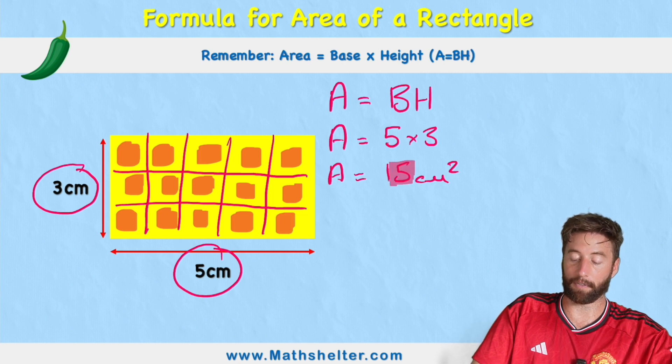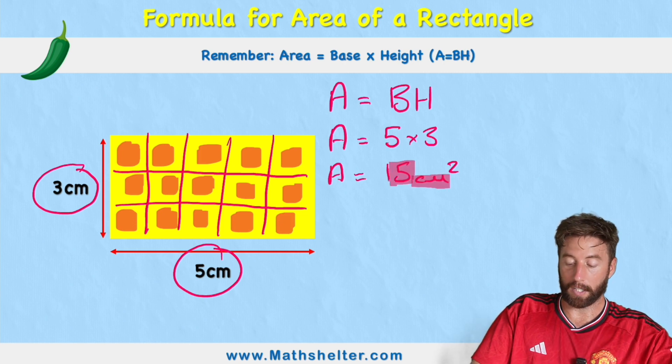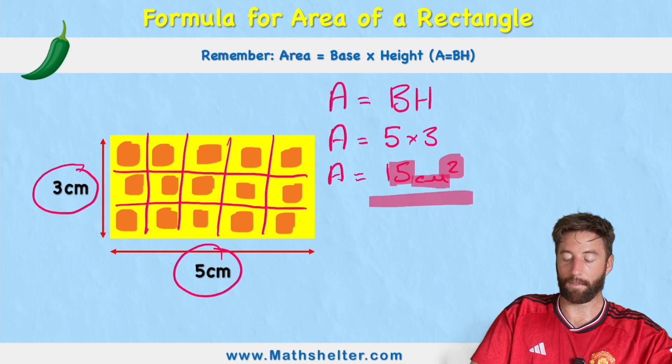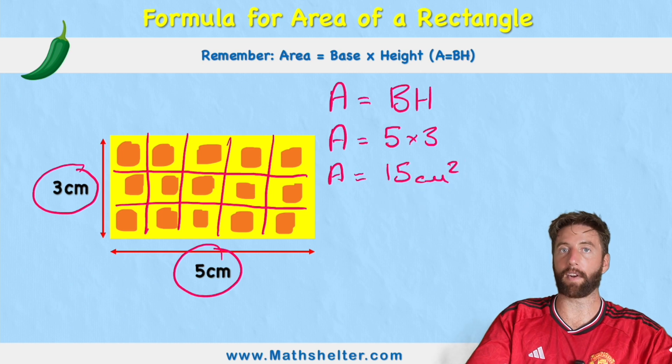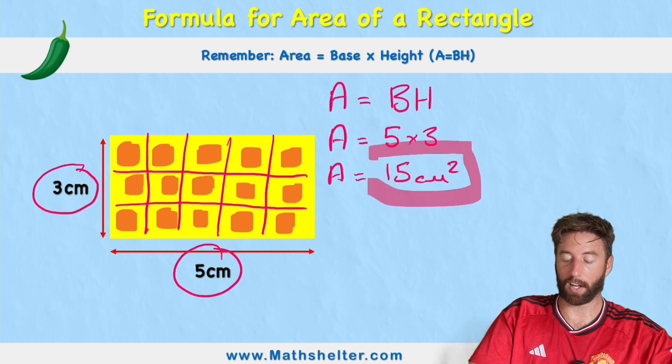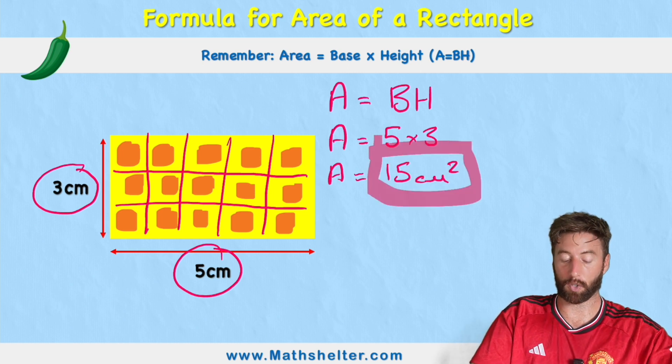So that's where we got our 15 from. And what have we got? We've got centimeter squares. That's why we say 15 centimeters squared. So in this very simple green chili challenge, our answer is 15 centimeters squared.